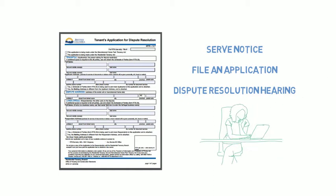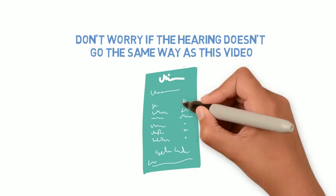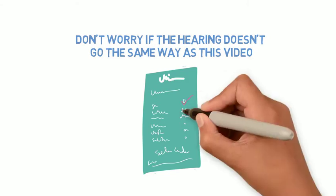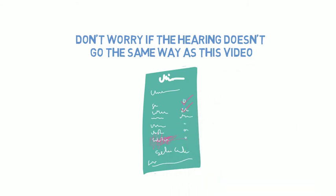This may result in a hearing with an arbitrator. This video will help you understand the dispute resolution hearing process. The Residential Tenancy Branch arbitrators are experienced in conducting hearings and will adjust them to suit the needs of the parties and the specific type of claim, so don't worry if the hearing does not go exactly the same way as this video.